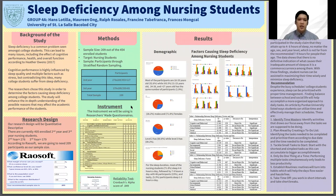The instrument we will be using is a researcher-made questionnaire which separates the factors causing sleep deficiency into five categories: first, cognitive and behavioral; second, environmental; third, school-related; fourth, social; and fifth, medical. For a reliability test, we used Cronbach's Alpha with a score of 0.849.